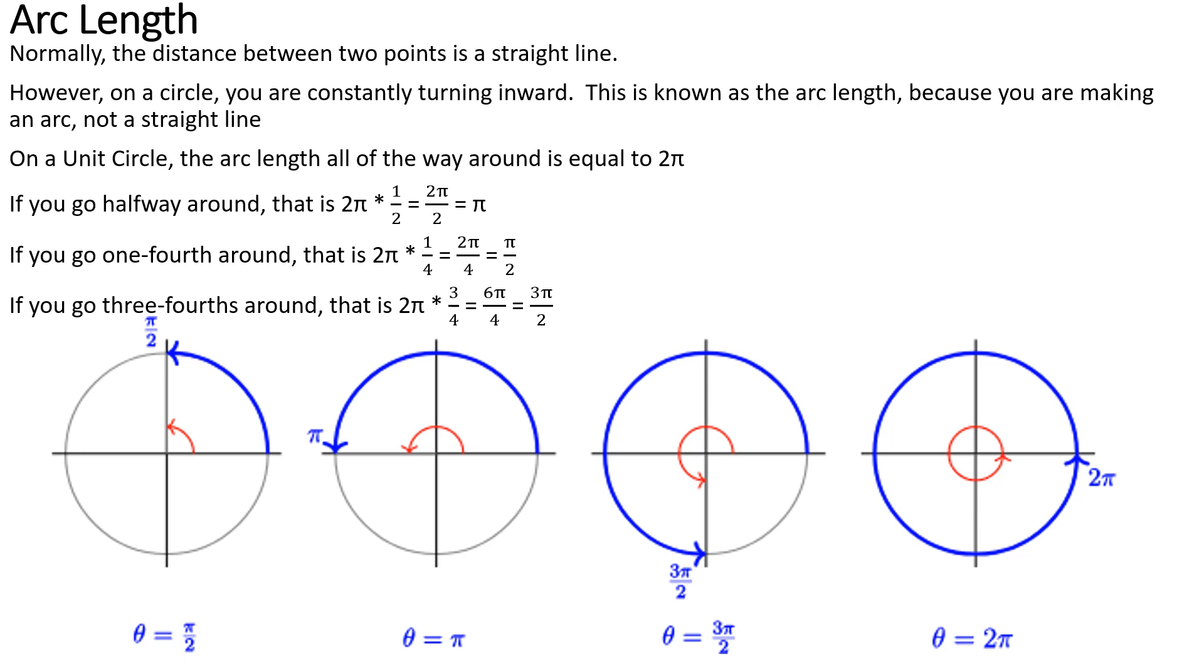Now, the arc length is that radial distance around the circle. If I go all the way around the circle, that is 2π, especially with the unit circle. I go a quarter of the way, that would be π/2, because halfway is π. Three quarters of the way is 3π/2. And then all the way around, back to its beginning, is 2π.